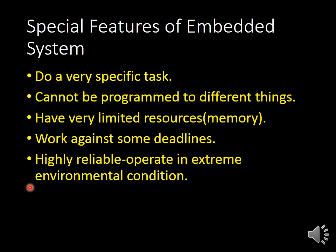Next, we are going to see the special features of an embedded system. An embedded system is designed for a very specific task — for a particular task, we use an embedded system, and it cannot be programmed to do different things. It also has very limited resources, that is, limited memory. It should work against some deadlines — it should satisfy some deadlines. Also, it is highly reliable, meaning it should operate in extreme environmental conditions. Even if there is a change in temperature, pressure, or humidity, it should not affect the system. These are the special features of an embedded system.